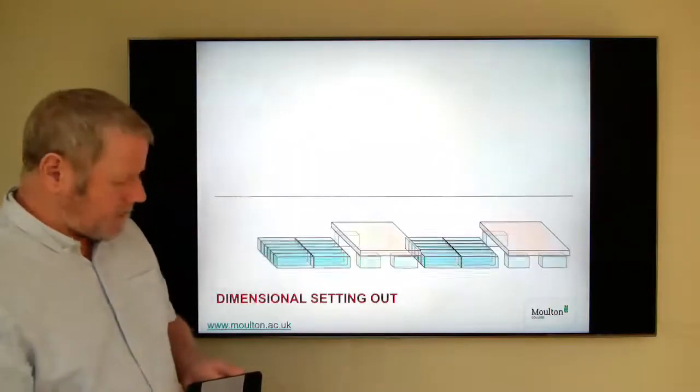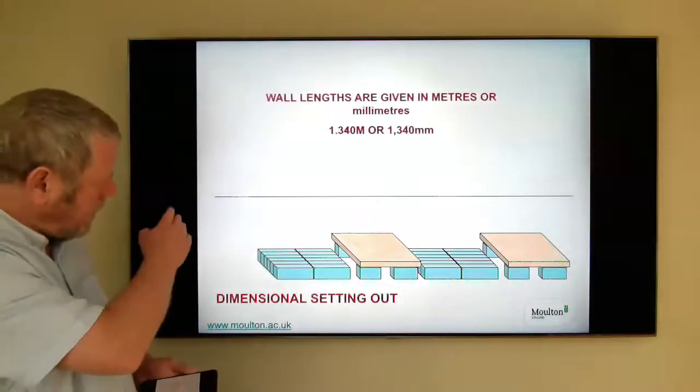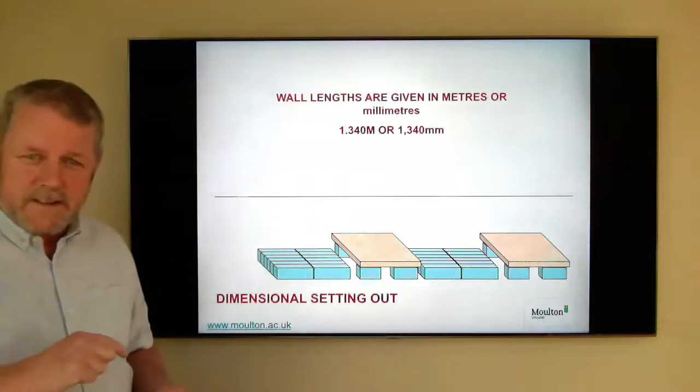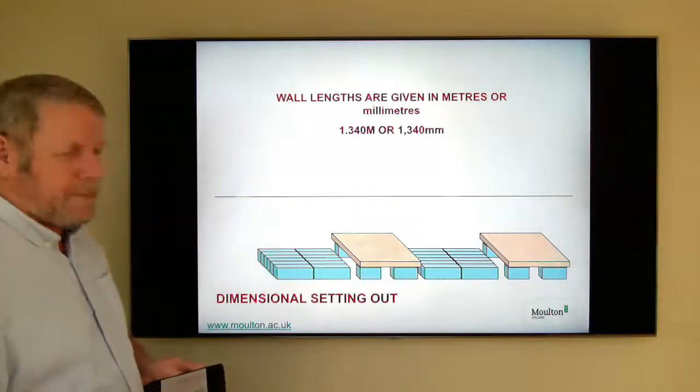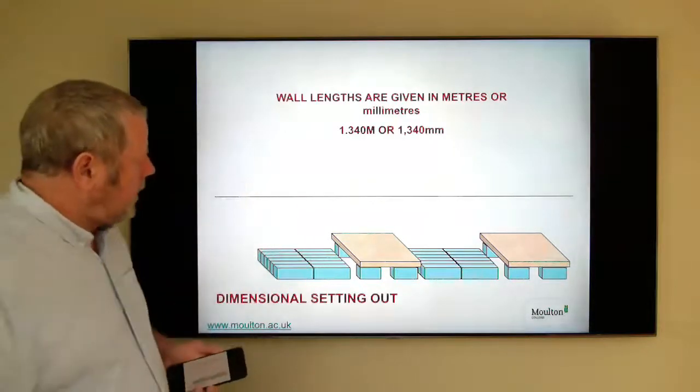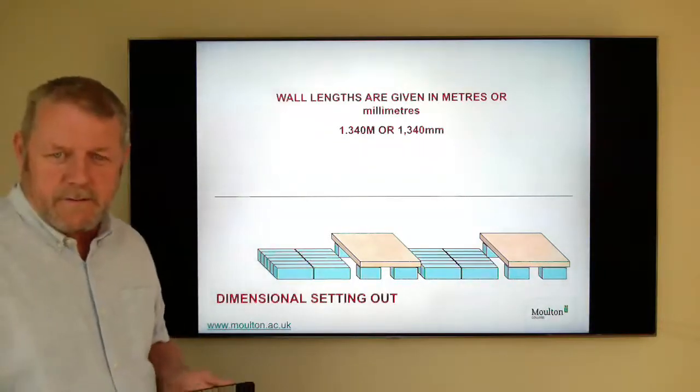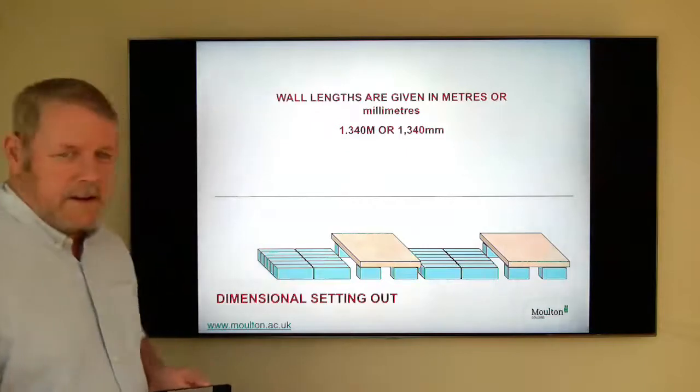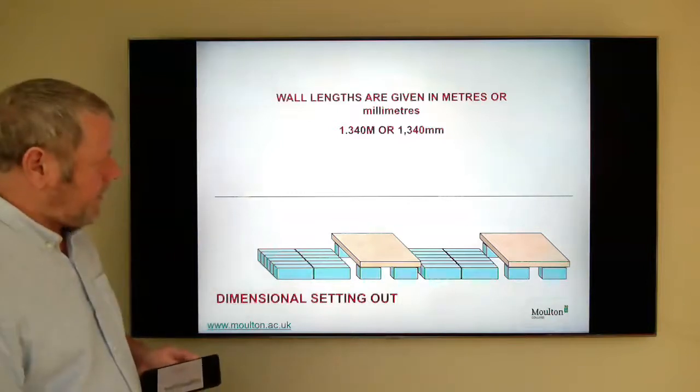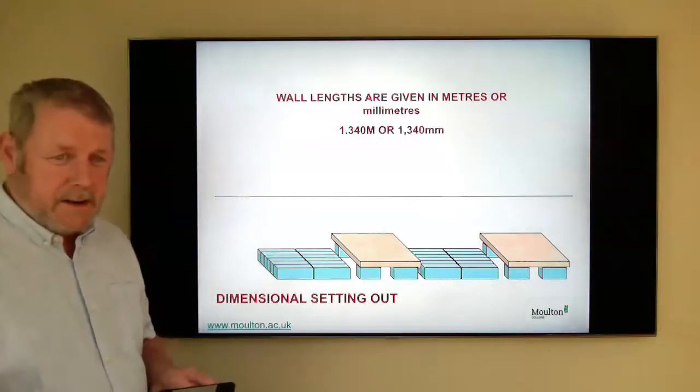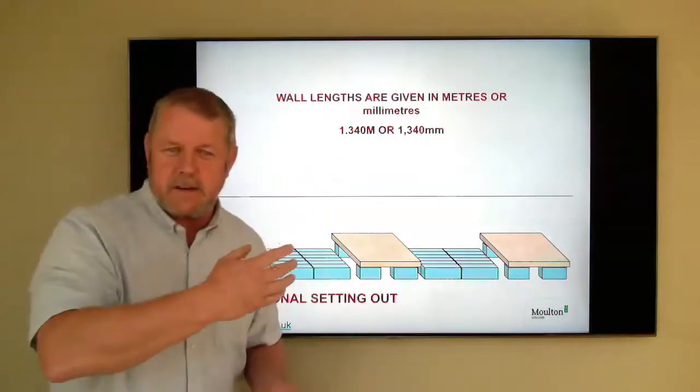And then look at the dimensional setting out. So again, there we are, we've stacked out. I'm going to look at the length of the wall now. This is key. We don't use centimetres in brickwork. We use metres or millimetres. So as you can see, 1.34 metres is 1,340 millimetres. If I was to measure something that was 900 millimetres, for instance, that would be 900 millimetres or 0.9 of a metre. It wouldn't be 90 centimetres. We don't use centimetres. So millimetres or metres are the dimensions we use. And of course, feet and inches have long gone, although no doubt you'll work with people on site who still use that quite commonly.